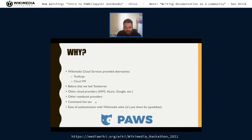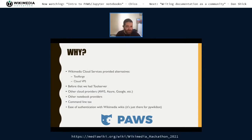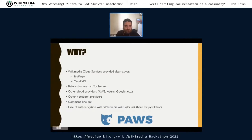For PAWS, it's just there. You already have authentication with Wikimedia wikis. You can just start coding right away. If you don't know how to code, you can even just copy something that someone else wrote and change it for your wiki — just translate the strings. It's a lot easier. We're trying to reduce the command-line tax to get people to use advanced tools for wikis.